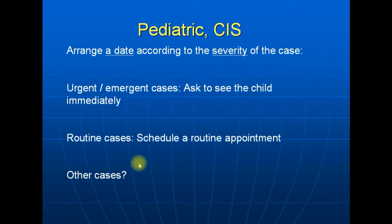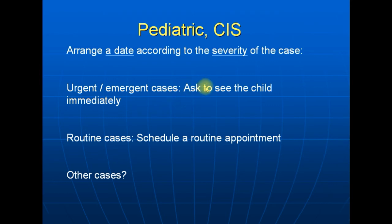You should also determine when to see the child. The severity of the case determines timing. For urgent cases like foreign body aspiration or bronchial asthma, say: 'Your child's condition is serious — please bring him immediately to the hospital.' For routine cases like nocturnal enuresis, scheduling an appointment next week is acceptable. For cases like high fever or severe diarrhea, you can ask: 'When can you bring him to the hospital?'